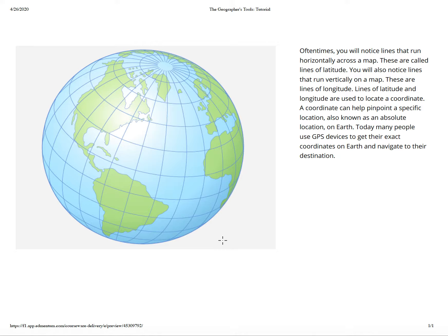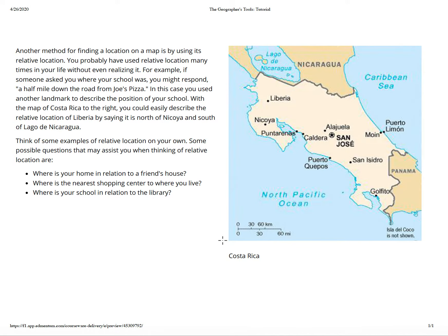You will notice lines that run horizontally across a map — they are called lines of latitude. You will also notice lines that run vertically on a map — these are lines of longitude. Lines of latitude and longitude are used to locate a coordinate. A coordinate can help pinpoint a specific location, also known as absolute location, on Earth. Today, many people use GPS devices to get their exact coordinates on Earth to navigate to their destination — for example, if you're going to a restaurant or a friend's house, you might use Google Maps or Apple Maps. Those are coordinates.